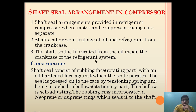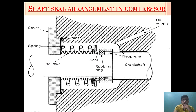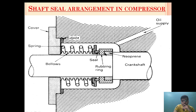The soft seal is lubricated from the oil inside the crankcase of the refrigeration system. As you can see, this is the crankshaft side where the piston and compression take place, and this is the motor drive side where the motor is attached. This is a self-adjusting spring bellow which has a hardened face that is put onto the rubbing face, which is rotating in nature.